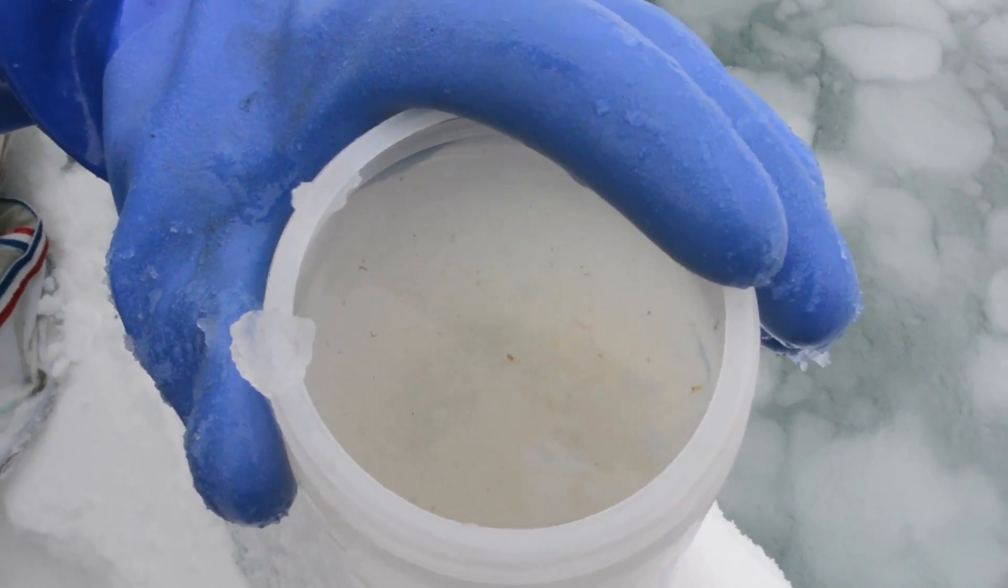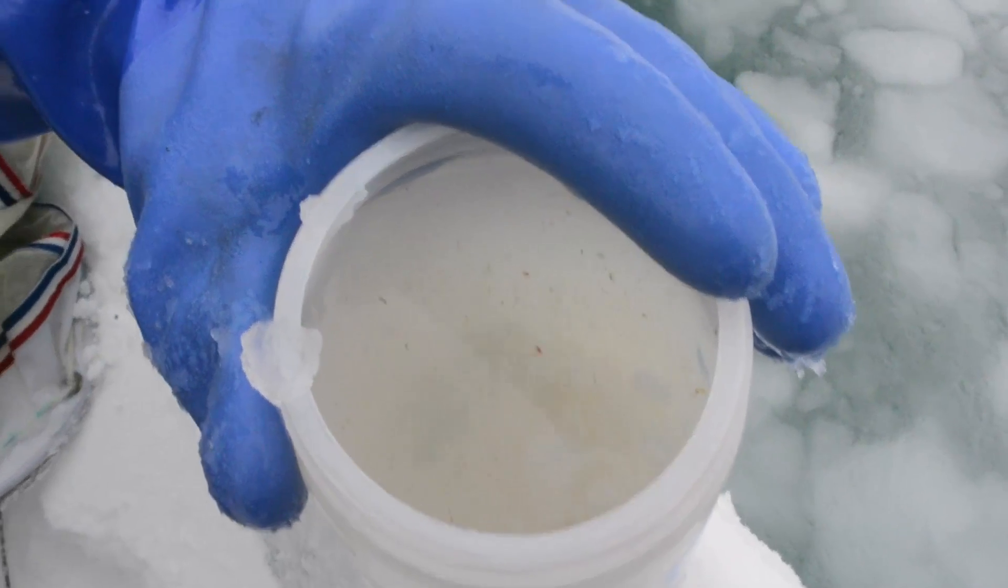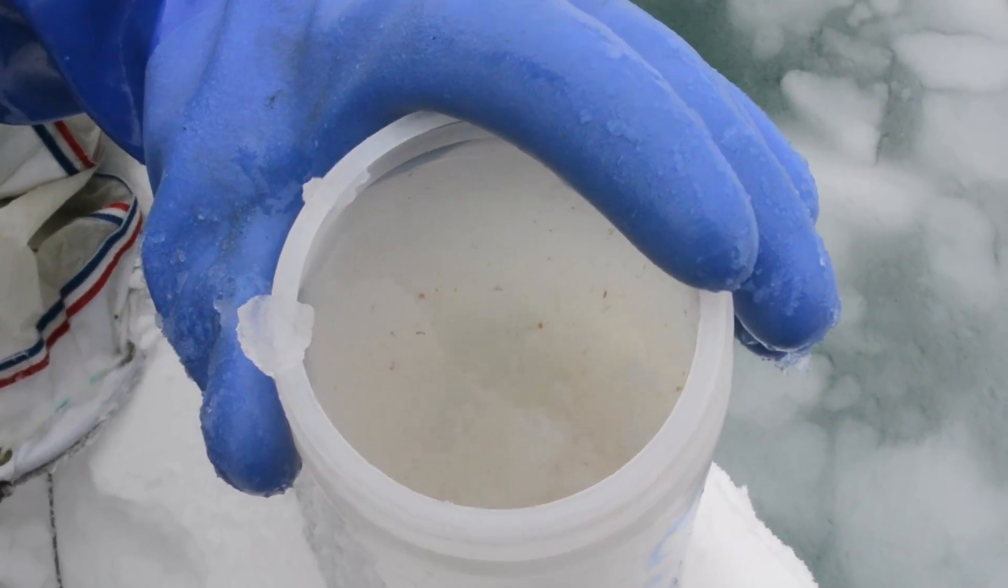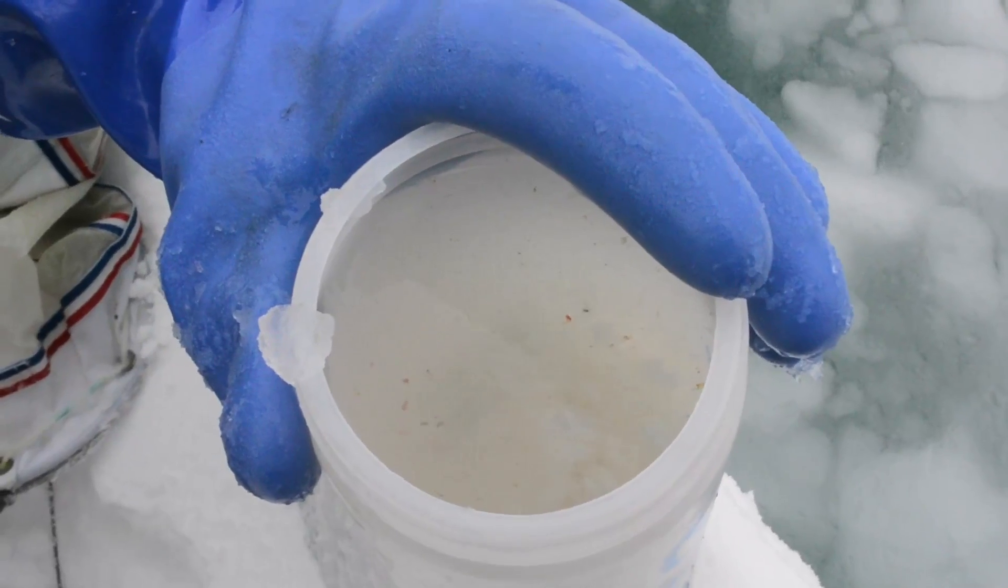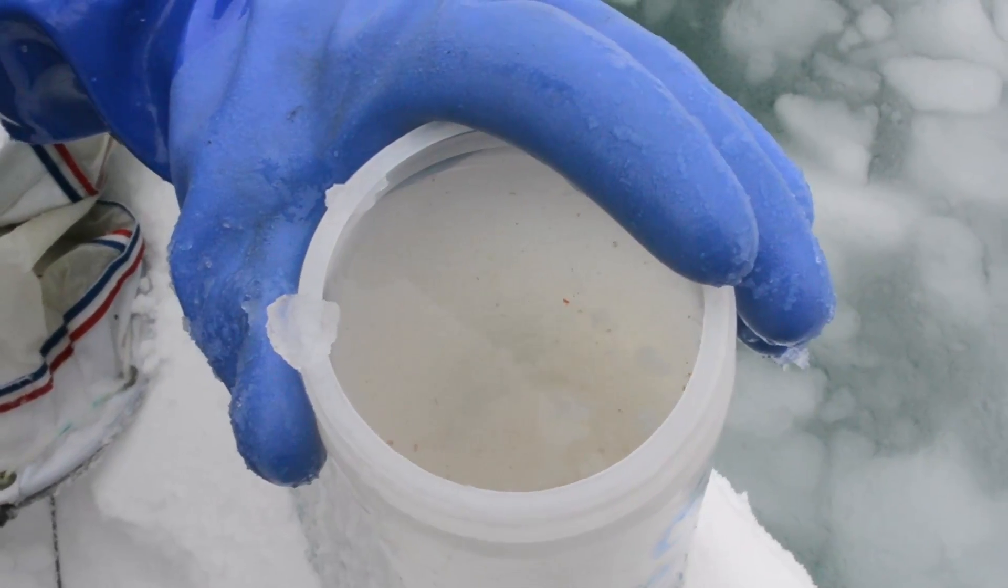The things that are swimming around are probably copepods and amphipods, and then the phytoplankton you really can't see. I'm going to have to take it inside and put it under the microscope in order to see what we have in terms of phytoplankton cells.